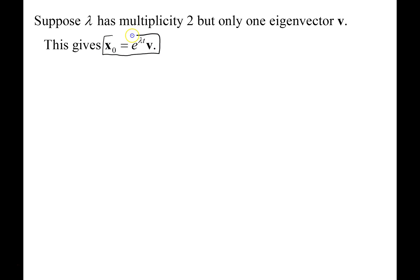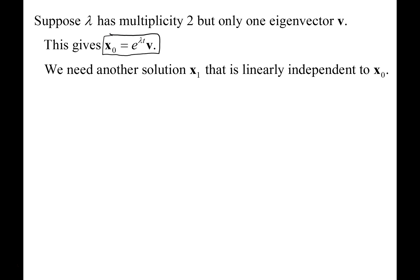This means the matrix A is defective — we don't have a full set of linearly independent eigenvectors. We have x0 as one part of the solution, and we need another part, which we'll call x1. We need x1 to be linearly independent of x0, and by the superposition principle, a linear combination of x0 and x1 will be our solution.